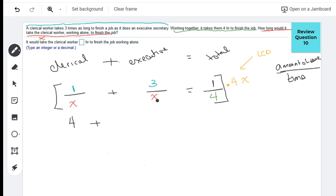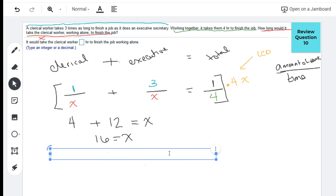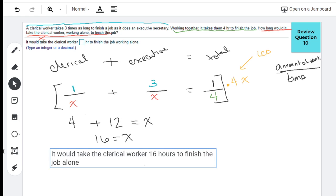And on this third one, the 4 in the bottom and the 4 in the top, they cancel, leaving me with 1 times X, which is 1X. And our last thing to do, just solve for X, so I add those together. So it would take the clerical worker 16 hours to finish the job alone.